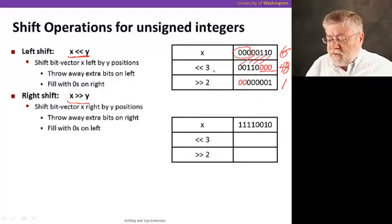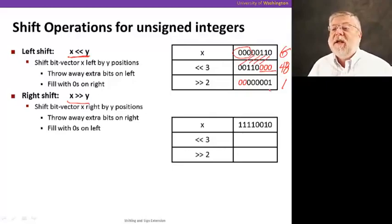So we can use shifts to often do multiplications quickly, because these are much simpler operations to implement in hardware than a multiplier would be. But of course, we can only do powers of two.